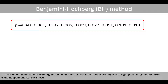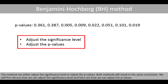To learn how the Benjamini-Hochberg method works, we'll use it on a simple example with 8 p-values generated from 8 independent statistical tests. The method can either adjust the significance level or adjust the p-values. Both methods will result in the same conclusion. We'll first discuss how we can adjust the significance level and then see how we can adjust the p-values.